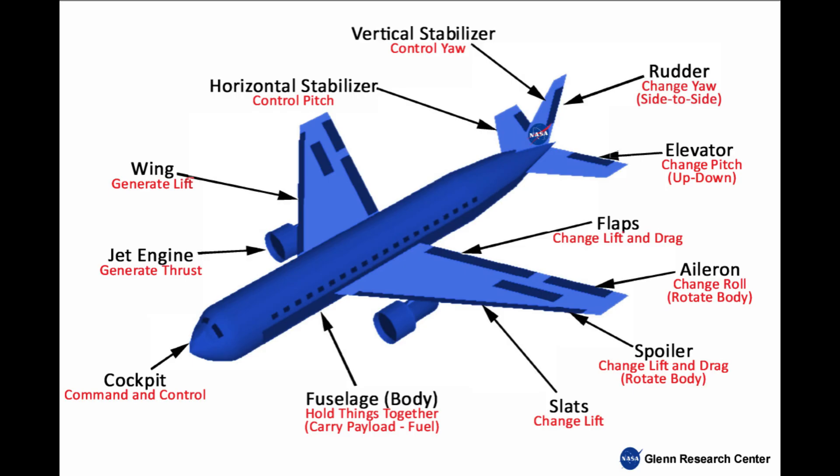Landing gear: the wheels — or sometimes skis or floats — that support the plane when it's on the ground. They retract during flight to reduce drag.